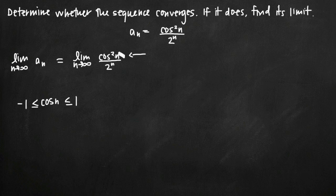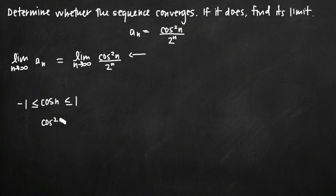Now if we square the cosine function — because we have cosine squared of n here — all the values of cosine between negative 1 and 0, all those negative values, when we square them they become positive. They're all going to be positive values between 0 and positive 1. If we square negative 1 we get positive 1; if we square 0 we just get 0. And everything in between, like negative 0.5, when squared becomes a positive value between 0 and 1. So cosine squared of n will always be greater than or equal to 0 and less than or equal to 1 — this numerator oscillates between 0 and 1, never less than 0, never greater than 1.